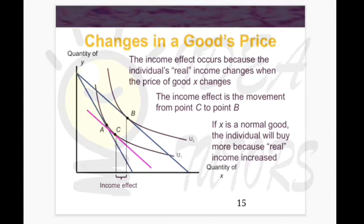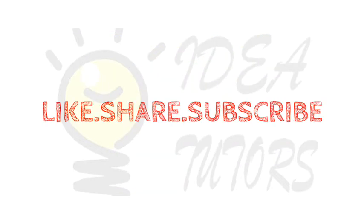To summarize: initially the consumer was at point A. When the price of good X dropped, the budget line shifted. We first moved from A to C — that is the substitution effect — and then from C to B — that is the income effect. Together, these two effects make up the total price effect. That was a short video on substitution effect and income effect.